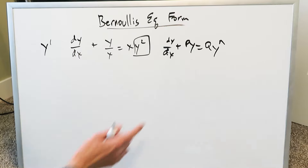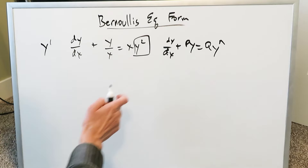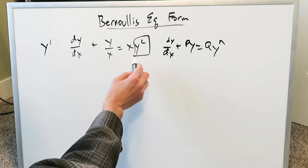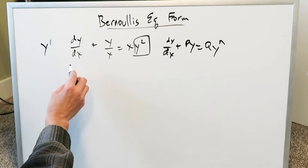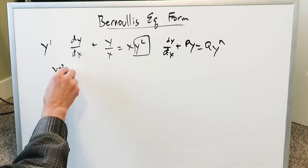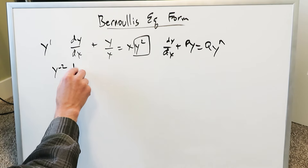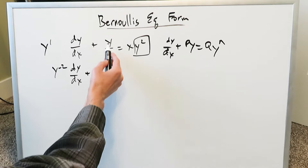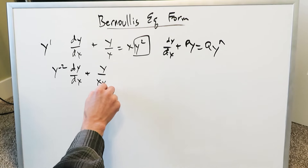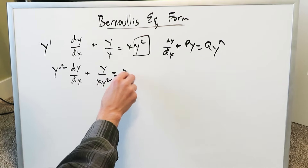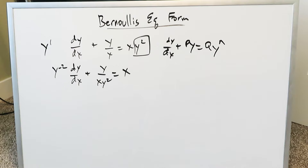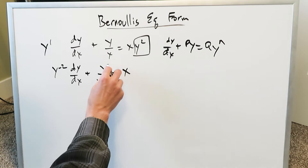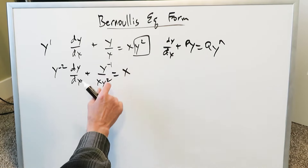The first step is to convert this into the first order linear form by dividing everything by y squared. When you divide everything by y squared, you'll have y to the minus 2 dy over dx. On this side, you'll have y divided by xy squared — which simplifies to y to the minus 1 over x — and that equals x because y squared is divided across.